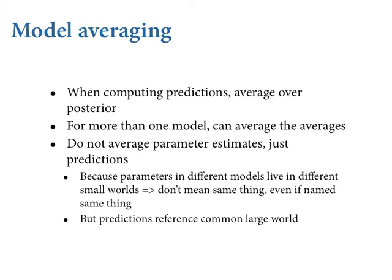Here's the way you think about it. When we compute predictions for a single model, use the full posterior — plucking out just the MAP is a formula for overconfidence. Likewise, when you fit more than one model, it'd be good to use the predictions of all the models and average over them. This guards against overconfidence in model structure, and it allows us to construct predictions that are less overfit than the predictions of any single model in the set.